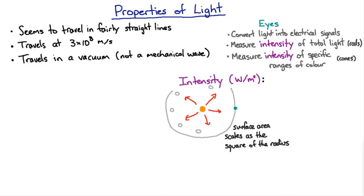So the intensity is defined as the power per unit area, and it tends to go down as the inverse square of the distance between the source and the receiver.